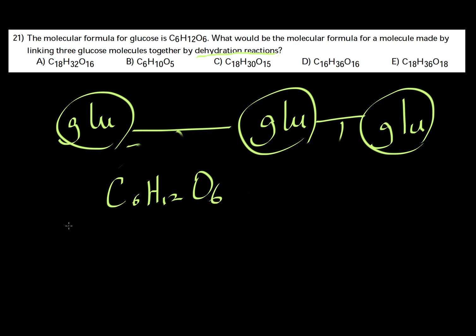If we multiply by three, we're going to get C18H36O18.